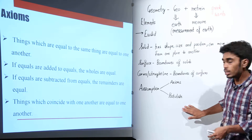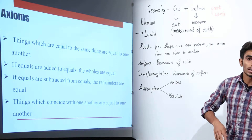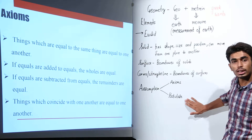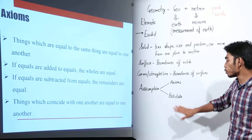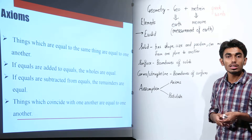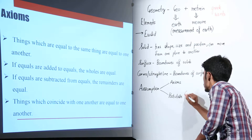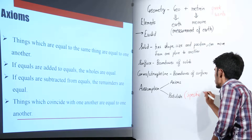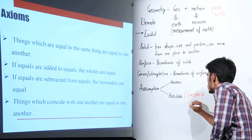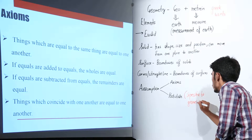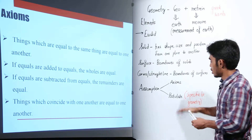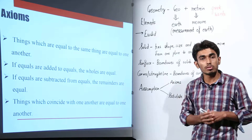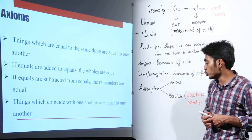What is the difference between axioms and postulates? Axioms are the assumptions that apply to general mathematics, but postulates are specific to geometry. So postulates are nothing but the assumptions that are specific to geometry. Now let us look at some of the axioms provided by Euclid.